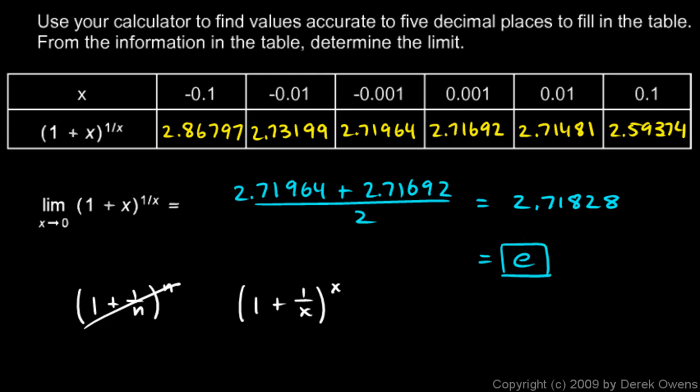If you've seen this expression before, that should make sense. If not, don't worry — we'll come back to e later when we work through all of the calculus with exponential and logarithmic functions. For now, understand how to find the limit using a table of values: we can't put in zero for x directly, but we can put in values near zero and observe what happens as we get closer, reading the limit numerically from the table.